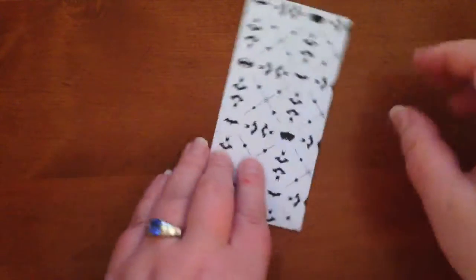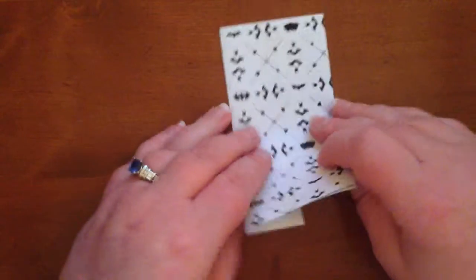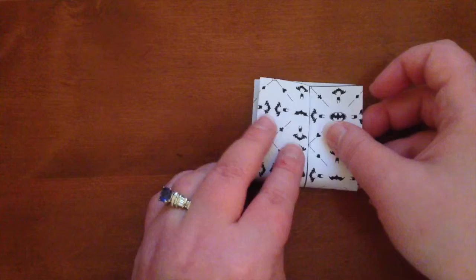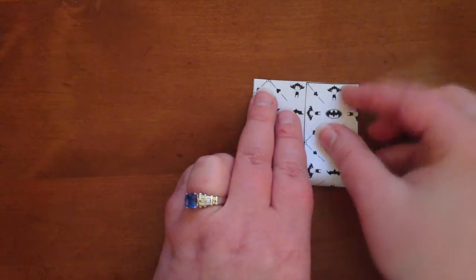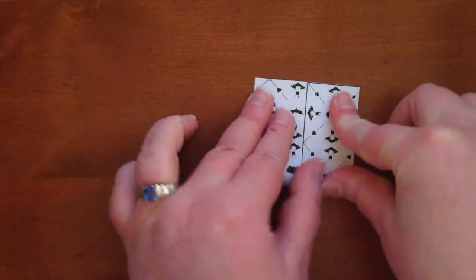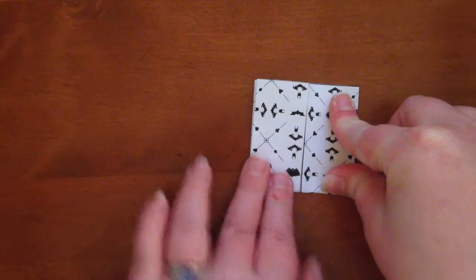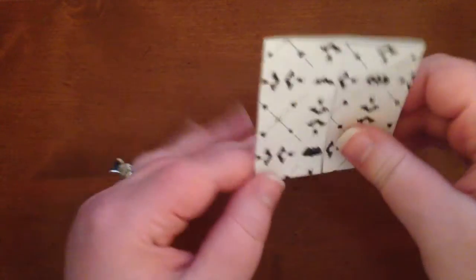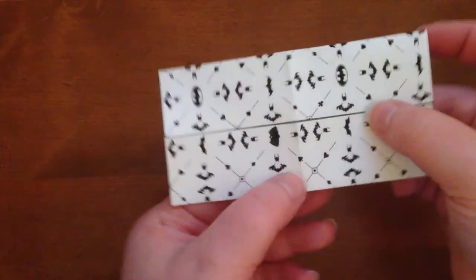So now you're going to flip it over again, poor Batman, he's getting kind of dizzy. We're going to fold it this way, again, end to end, nothing super crazy. And a nice and firm crease. Now that has turned our rectangle into two nice little squares.